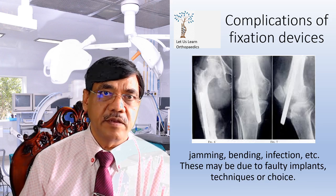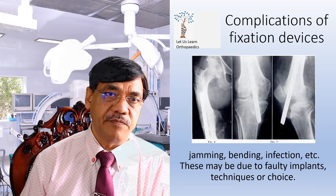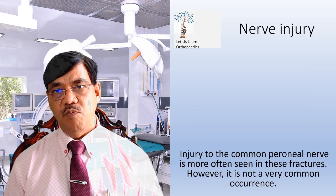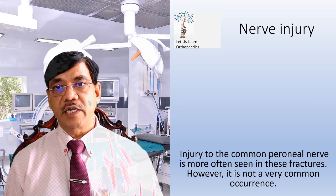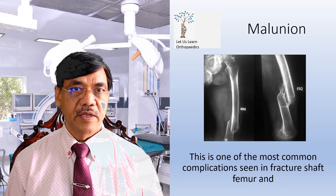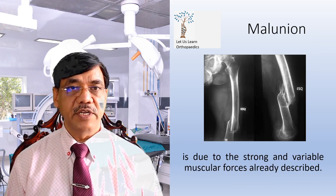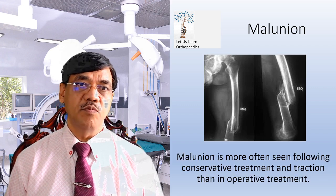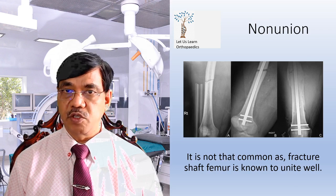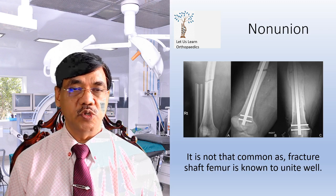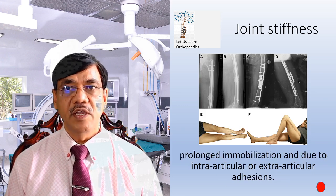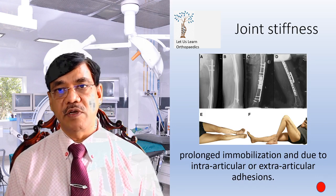Implant complications also include jamming, bending, and infection, which may be due to faulty implant technique or faulty choice of implant. Injury to the common peroneal nerve is occasionally seen. Malunion is one of the most common complications, due to the strong and variable muscle forces described earlier, and is more often seen following conservative treatment and traction than operative treatment. Nonunion is not that common, as fracture shaft femur is known to unite well. Joint stiffness: the knee joint may become stiff due to quadriceps atrophy following prolonged immobilization, or due to intra-articular or extra-articular adhesions.